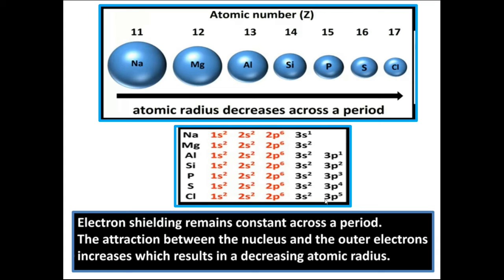We can say the electron shielding effect remains constant across a period because the inner shell count remains constant. The attraction between the nucleus and the outer electrons increases, which results in a decreasing atomic radius.